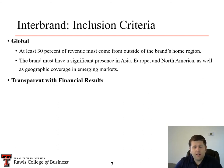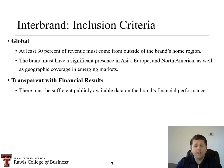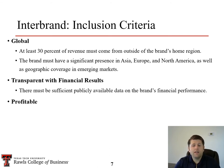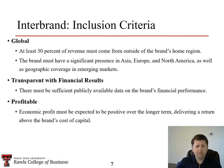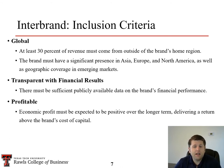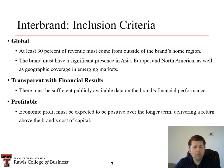Brands also have to be transparent with financial results. That's why Interbrand typically focuses on publicly traded companies, since their data is available and they can assess financial performance using 10-K reports provided to the SEC. They also have to be profitable. A lot of companies — like Tesla, which hasn't been profitable in some years — wouldn't qualify. Interbrand looks for companies showing positive returns over the long term.